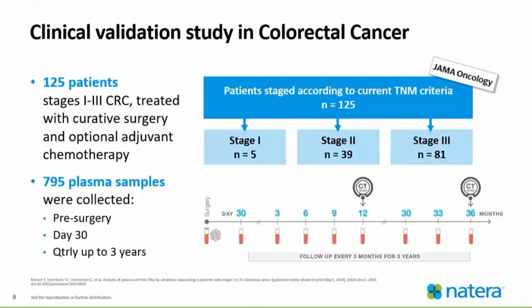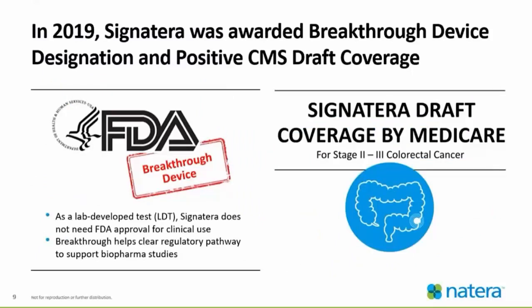Looking more closely at the colorectal study published in JAMA Oncology: there were 125 patients, stages one through three with colorectal cancer, treated with curative surgery and optional adjuvant chemotherapy. 795 plasma samples were collected pre-surgery, day 30, and quarterly up to three years. This is not a one-time test — it is serial testing studied over a three-year span. Because of this 2019 study and others, Signatera was awarded breakthrough device designation and positive CMS draft coverage. Being an FDA breakthrough device helps clear the regulatory pathway to support biopharma studies, and this coverage was granted because it was highly and heavily validated.